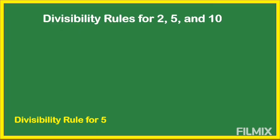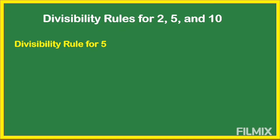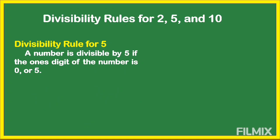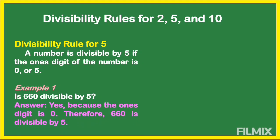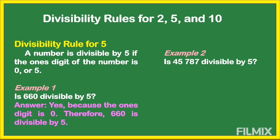The next one is the divisibility rule for 5. How do we know that the number is divisible by 5? A number is divisible by 5 if the one's digit of the number is 0 or 5. For example: is 660 divisible by 5? Yes, because the one's digit ends with 0, so 660 is divisible by 5. Another example: is 45,787 divisible by 5?